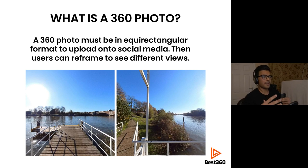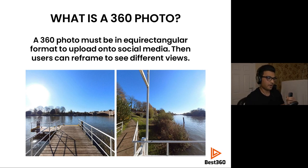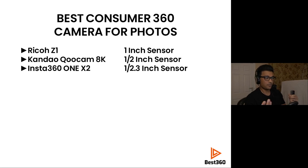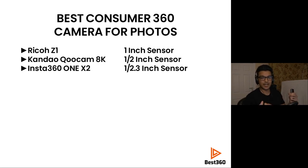When you upload an equirectangular photo onto Facebook, that's what the user will see when scrolling through their feed — they can look around the 360 photo. For the best consumer cameras for photos, number one is probably the Ricoh Z1 because it has a one-inch sensor. The larger the sensor, the more information the camera collects, giving you a photo with more dynamic range, which results in a better photo in low light and daylight.